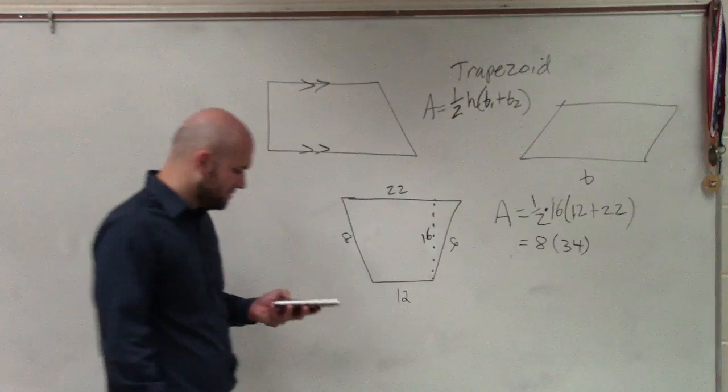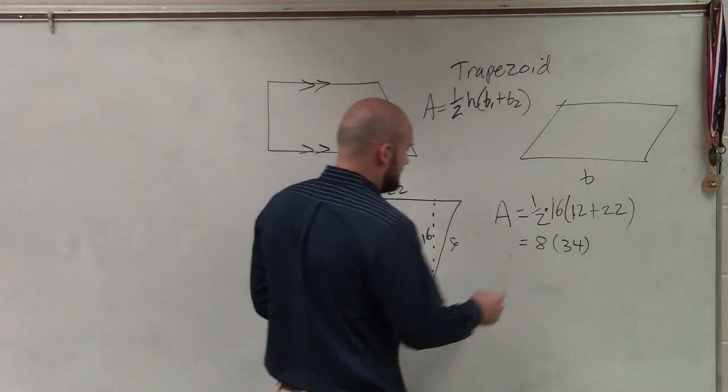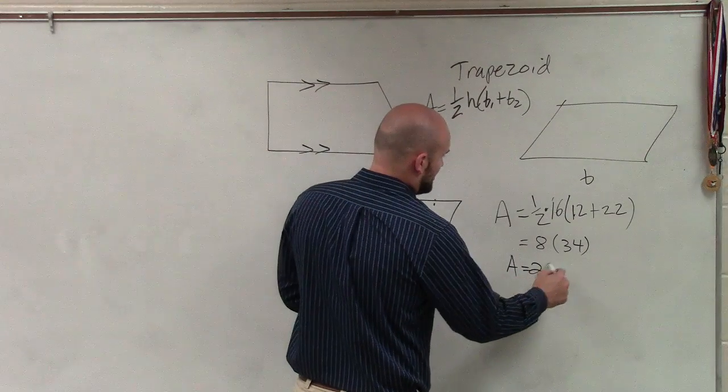Multiply those two, 8 times 34. Area equals 272.